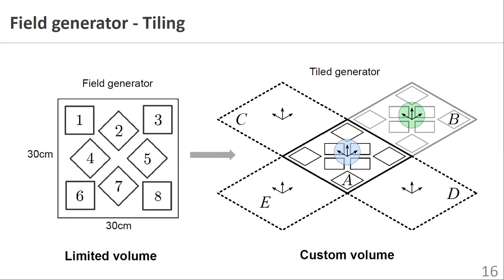Tiling of multiple field generators is then possible since the relative origins of additional field generators can easily be determined if they are placed together and share a common edge as shown. This provides a simple means of expanding the total spatial tracking volume in which a magnetic sensor can be tracked.